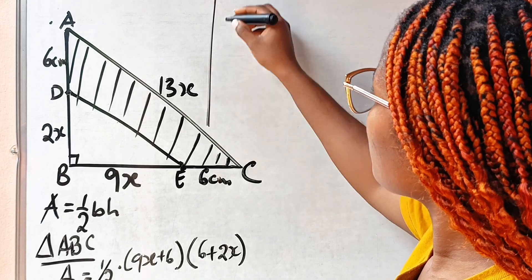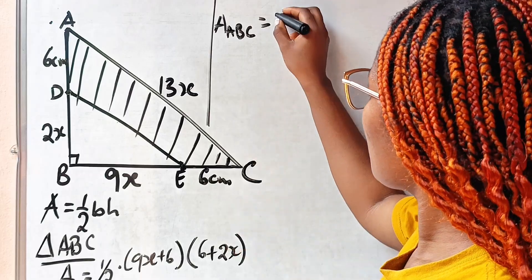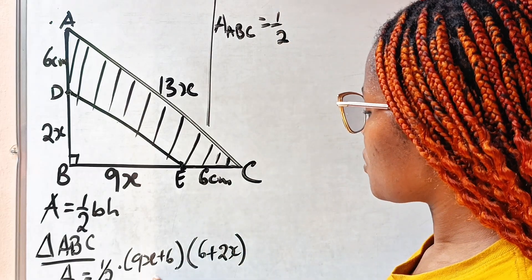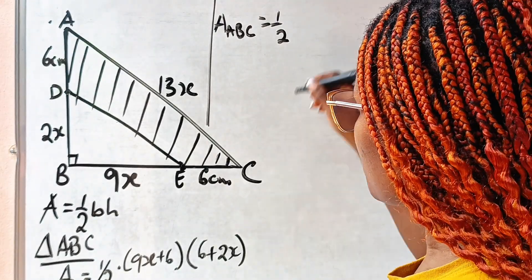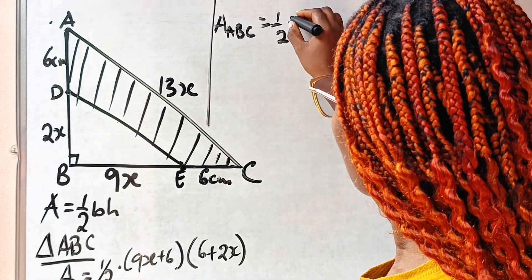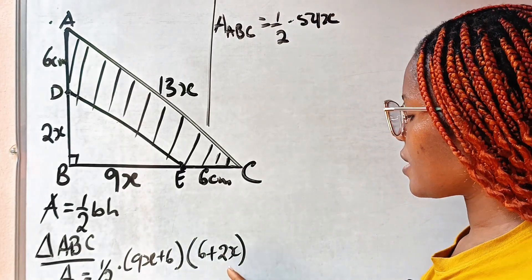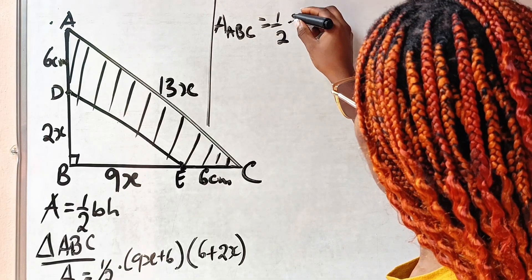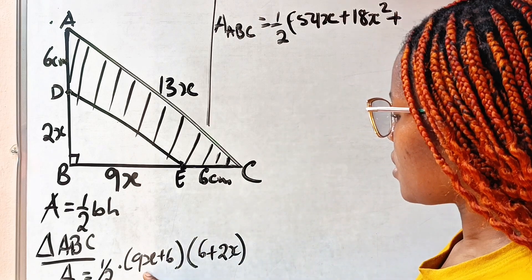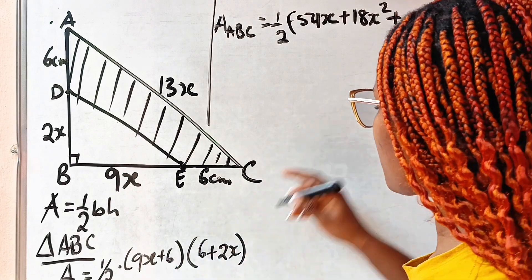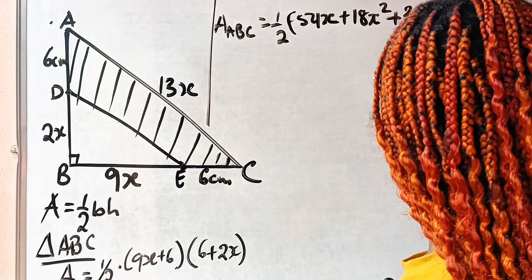Moving forward, we'll have the area of triangle ABC equal to half. Now let's open these brackets. 9x multiplied by 6 gives us 54x. 9x multiplied by 2x will give us 18x squared. Then 6 times 6 is 36, plus 6 times 2x is plus 12x.